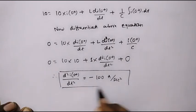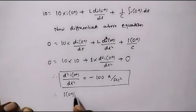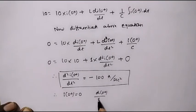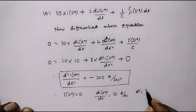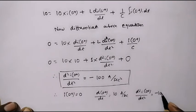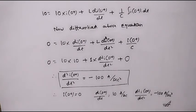This is the required solution. Therefore, I of 0 plus is equal to 0, the first derivative of current di of 0 plus by dt is equal to 10 amperes per second, and d square I of 0 plus by dt square is equal to minus 100 amperes per second square. Thank you.